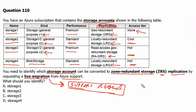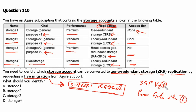From the live migration support table, only the standard general purpose v2 account is supported for live migration. That is one account we do have, and another one is the premium file share account. So only these two account types can be live migrated using Microsoft support. Therefore, in our answer, storage 2 account can support the live migration. The premium file share account is not available in our list. Therefore, option B is the correct answer.